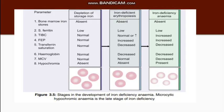Going to the stages of iron deficiency anemia along with the laboratory features. Firstly, there is depletion of the iron storage. In this stage, if we do the Pearl stain on bone marrow it will be absent. The serum ferritin will also be low because storage iron is decreasing. However, other parameters will be normal — there will be no hypochromia, MCV will be normal, hemoglobin will be normal, and transferrin will be normally saturated with iron.